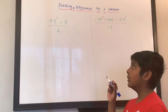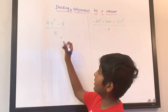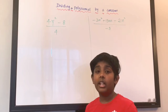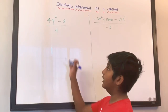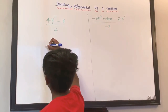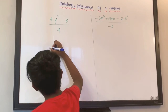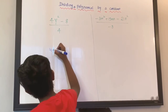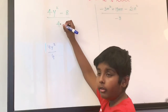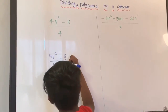4y squared minus 8 over 4. If there is a line between the numbers, that is understood as division. So we're going to divide. Let's put it in two parts: 4y squared over 4, because we're dividing by 4, and then minus 8 over 4.